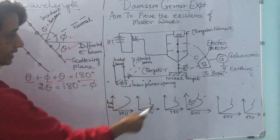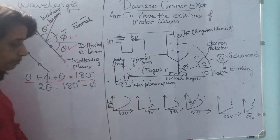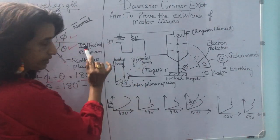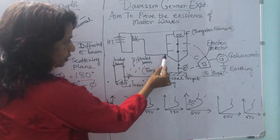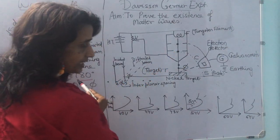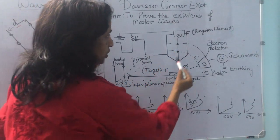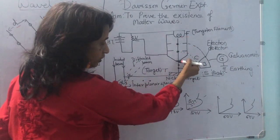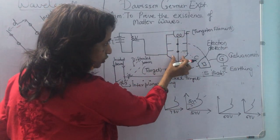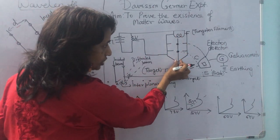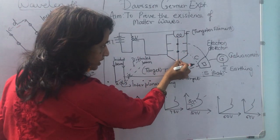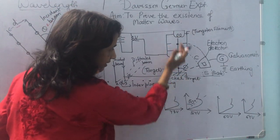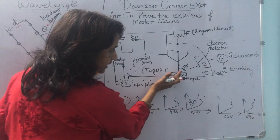Now let us understand the experimental setup of this experiment first. Here is my high tension battery, which is giving us a voltage supply. Here is a tungsten filament which, when heated, emits a stream of electrons. This electron gun gives a direction to the emitting electrons and makes them fall on a nickel target straight.